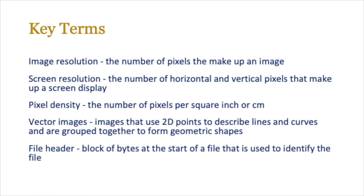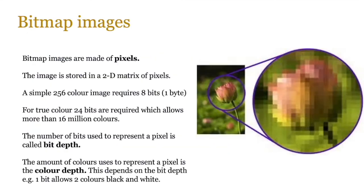Do pause the video and go through the key terms. Now, bitmap images are made of pixels — you knew this from IGCSE — and the image is stored in a two-dimensional matrix of pixels, so you only get length and height. We don't talk about depth because it's not three-dimensional. A simple 256-color image requires eight bits, or one byte, which is the amount of colors you can fit in that particular bit range.